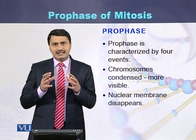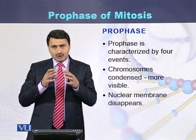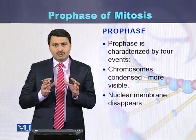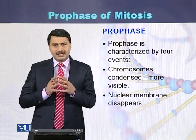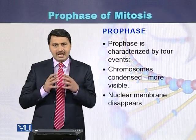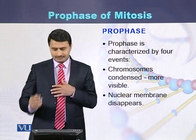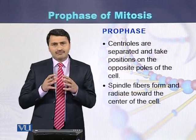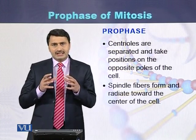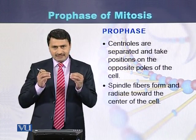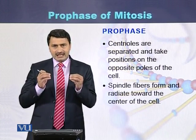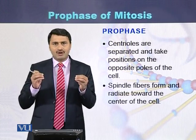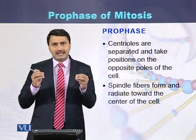The second event of prophase is that the nuclear membrane, which is present outside the chromosomes, disintegrates and disappears. The third event of prophase is that centrioles divide and take position on the opposite poles of the cell.